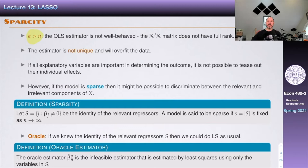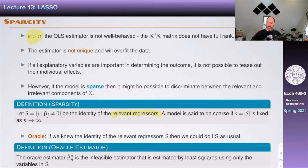In the genes example, there are a gazillion genes but only a handful that really matter for the question you care about. In economics, among all the variables, interactions, and squares, not all of them matter — that's the sparsity assumption. We then define a benchmark called the oracle: the least squares estimator you would compute if you knew the identity of the relevant regressors. If there are a gazillion covariates but only 10 that matter, you'd run a regression on just those 10. That's the oracle estimator — it's infeasible, but it's our benchmark.